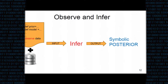The typical workflow of a Bayesian programmer is to define some model and a prior, then use observed constructs to tell how to update the prior given the data. The data and the model are then fed as input to the infer construct, which outputs a symbolic posterior distribution that can also be turned into an actual distribution from which we can sample.